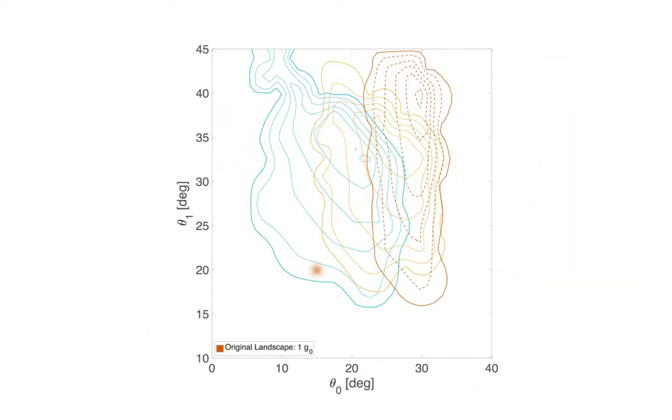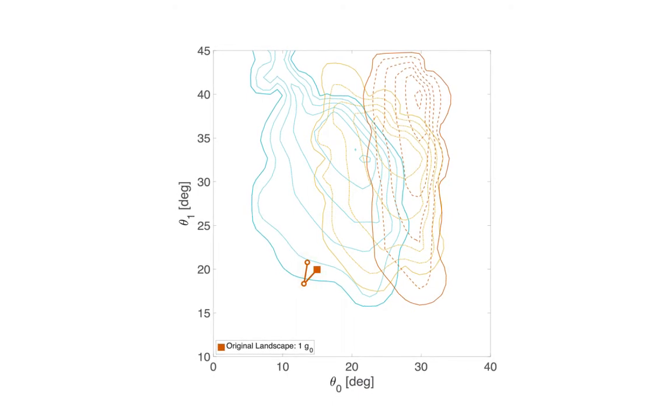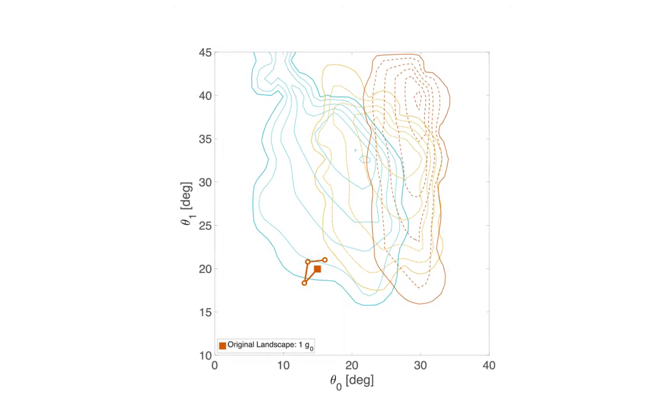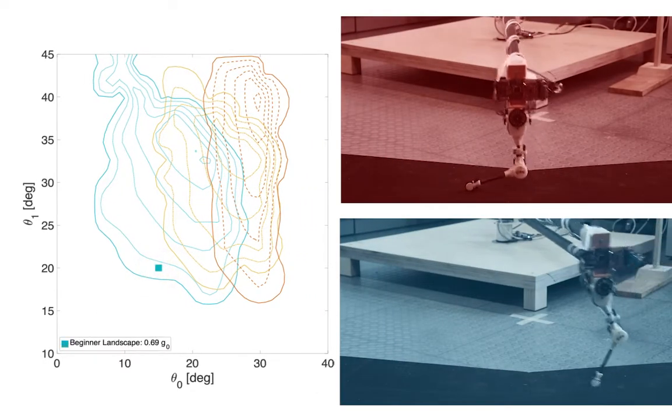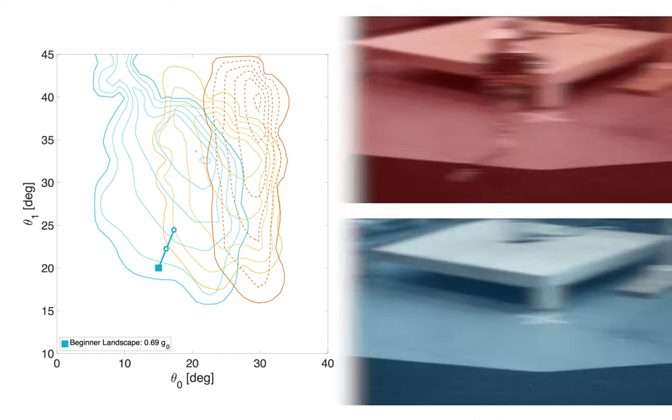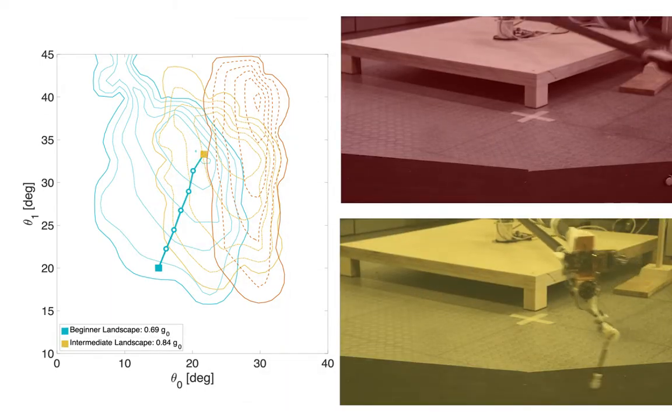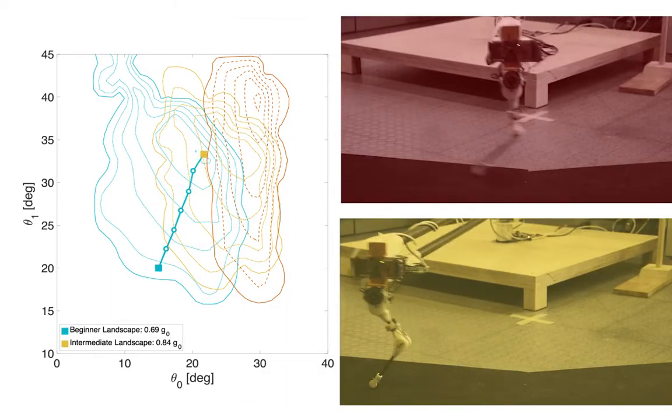If the hopper is initialized with parameters far from the peak of the landscape, there may be no local gradient to learn from. Switching to reduced gravity can then allow the hopper to improve its policy sufficiently, until it can continue learning on the original landscape.